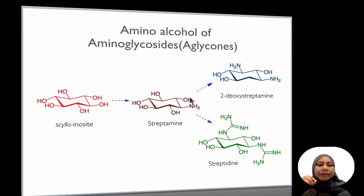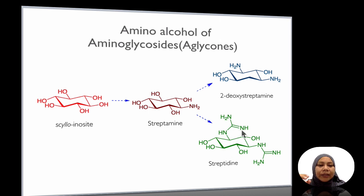D-deoxy tells you that one of the OH groups is not there — that is D-deoxy streptamine. Whereas if streptamine is further modified to streptidine, it will have an arginine moiety on both sides.